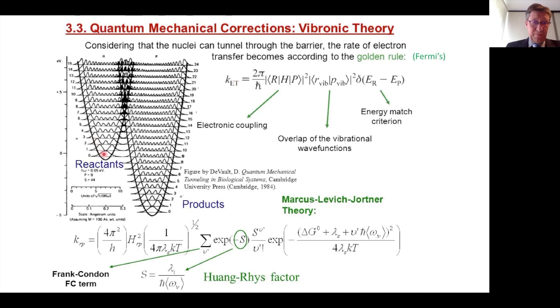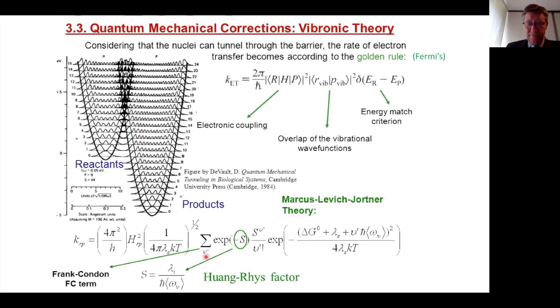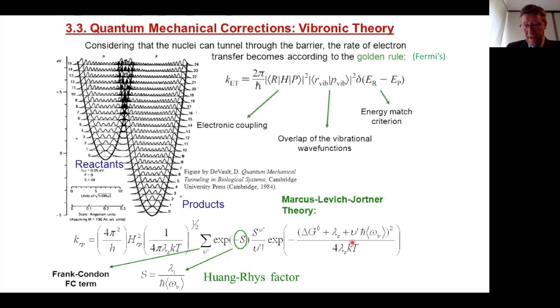This is the best way that we can represent this overlap of vibrational wave functions. Here we see the reactant state, the product state, we see all the vibrational wave functions that are drawn in. This here in black is the overlap of the vibrational wave functions. Mathematically, it is the second part of this equation. The Franck-Condon term is this summation of these exponential functions with this scaling factor in front.